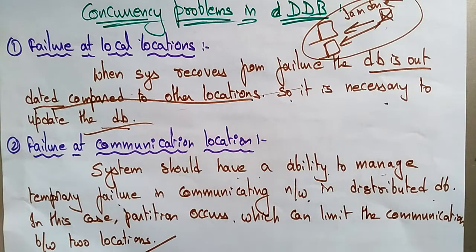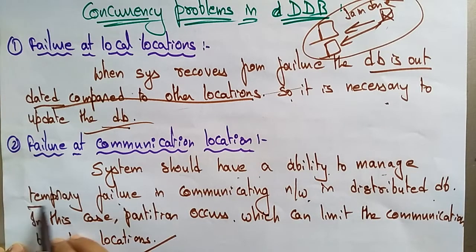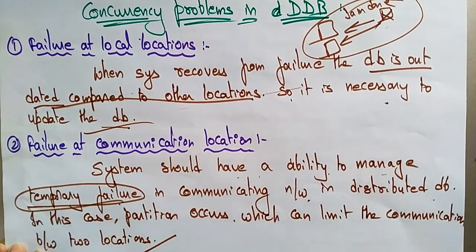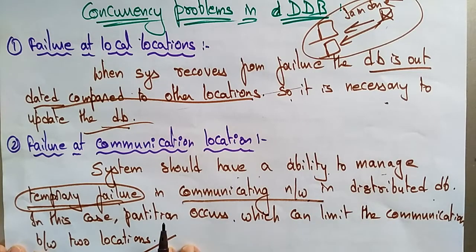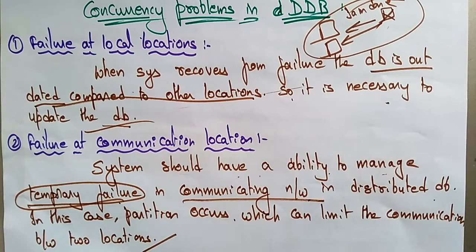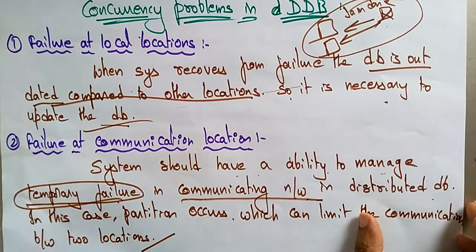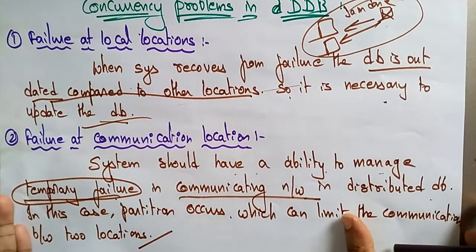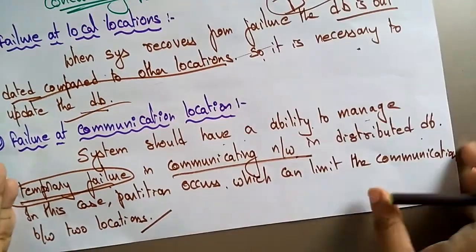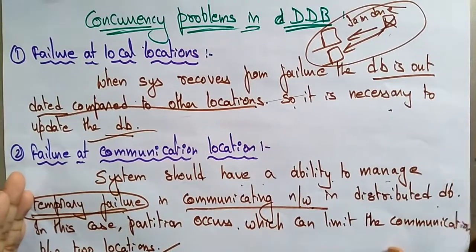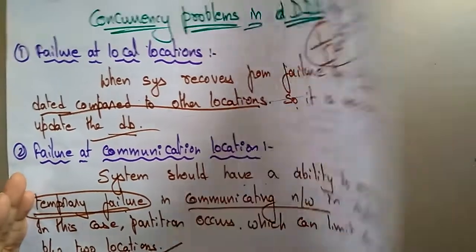Failure at communication location means the system should have an ability to manage temporary failures in a communication network, especially in a distributed environment. If it is managing temporary failures and a partition occurs, it can limit the communication between two locations.